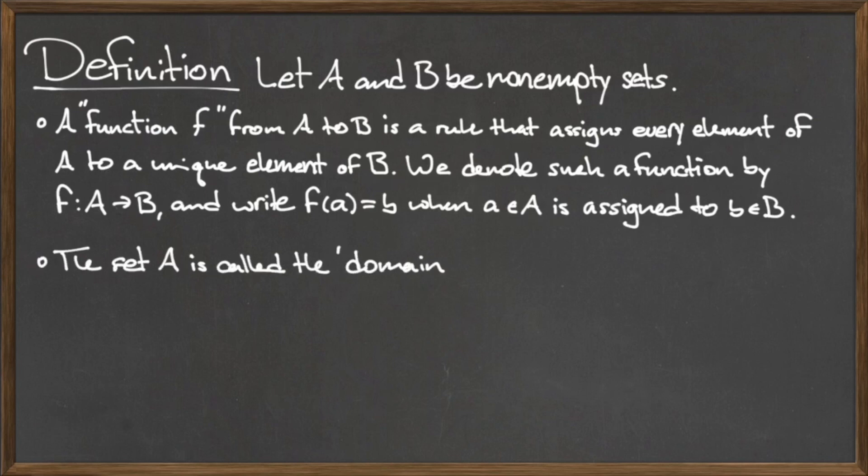The set of inputs to the function, which here we denote with the capital A, is called the domain of the function f. And the set B, which is the set of all outputs of the function, is called the codomain.